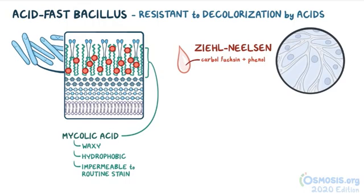Other staining methods can be used, such as kinyoun staining, in which the bacteria appear bright red on a green background, and fluorescence microscopy using specific fluorescent dyes like auramine-rhodamine stain.